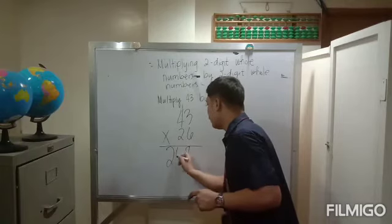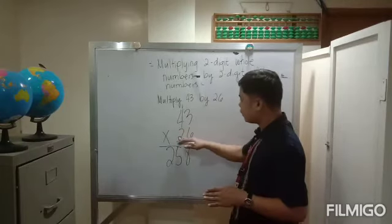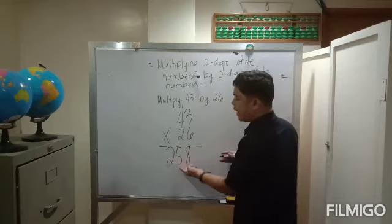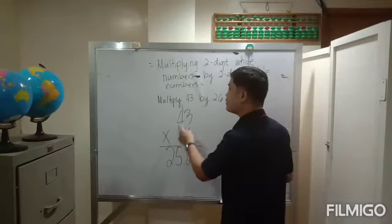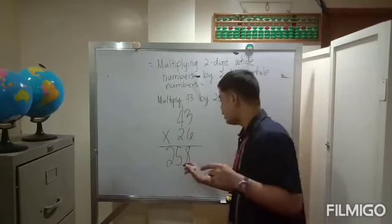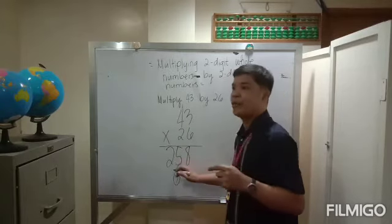We have 258. After that, we'll proceed to the next number. We have two times three equals six. That six will be placed here below the five, because the two is in the tens place, and we must also place that answer in the tens place.